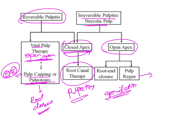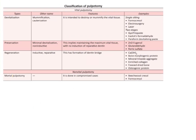Apexification or pulp regeneration therapies are the alternatives when the apex is open. These are the different indications for the different types of pulp therapies. What is also important from the topic of pulpotomy is the various types of pulpotomy — this is a very important and frequently examined question — as well as the materials used for these pulpotomies.